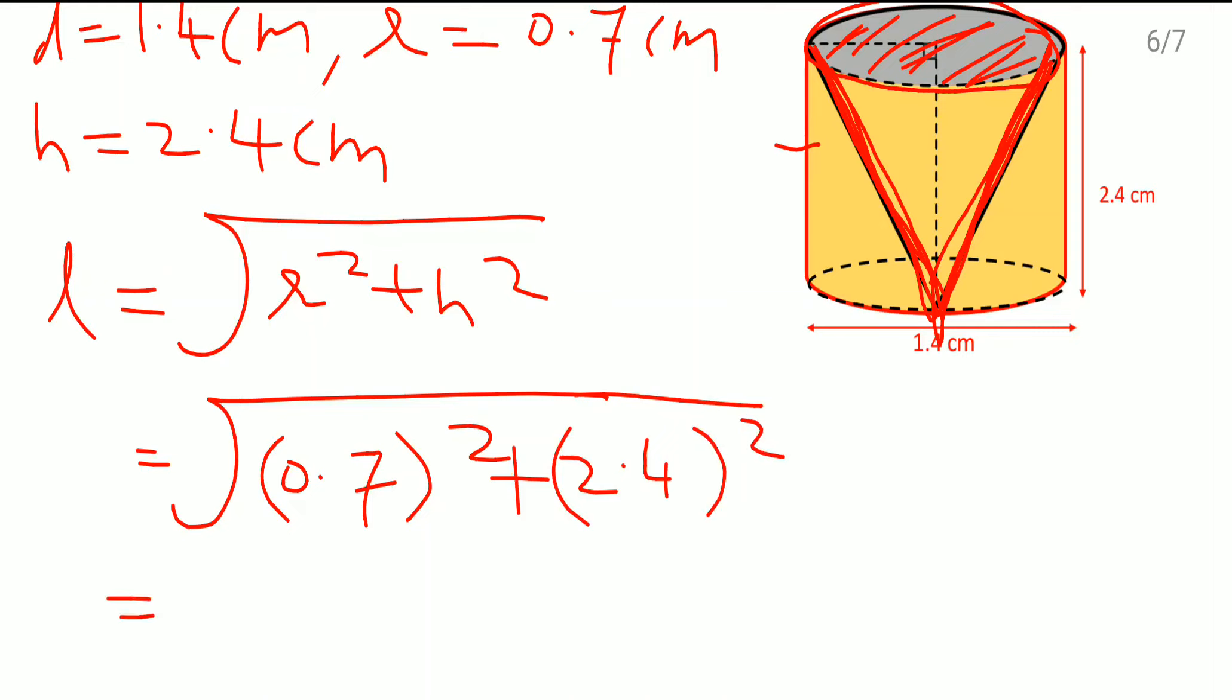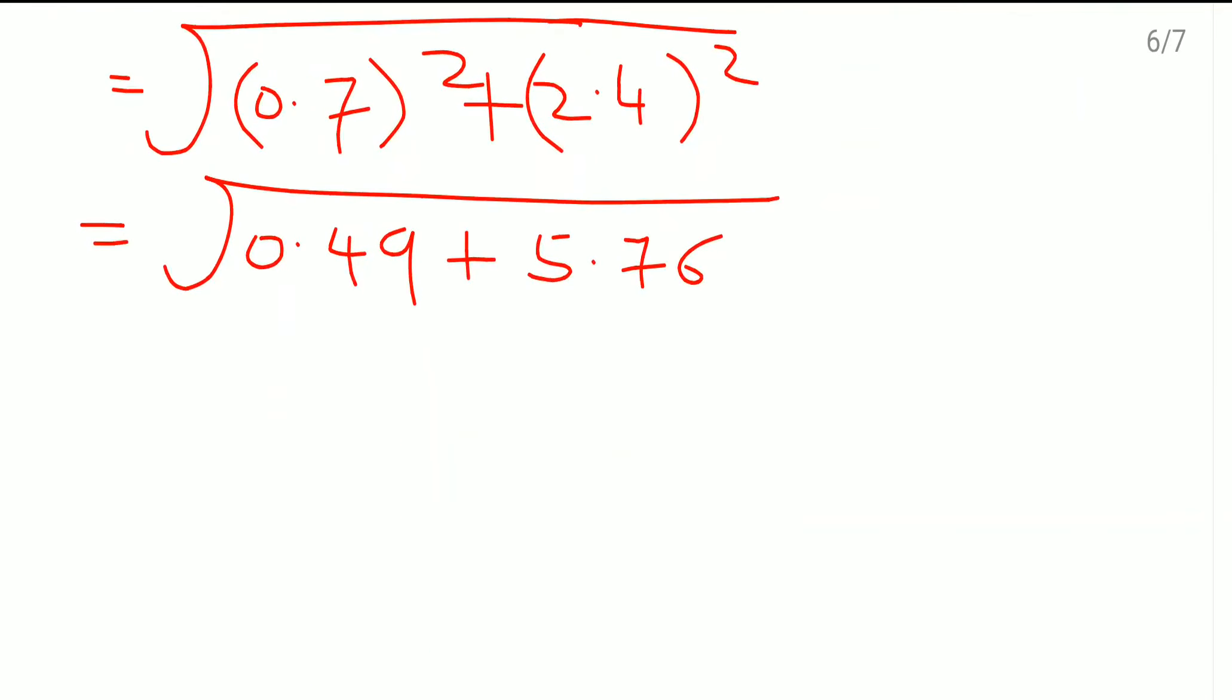0.7² means 0.49 plus square of 2.4, it is 5.76. As we add it we are getting 6.25, and square root of this one is 2.5 cm. So we got the slant height.